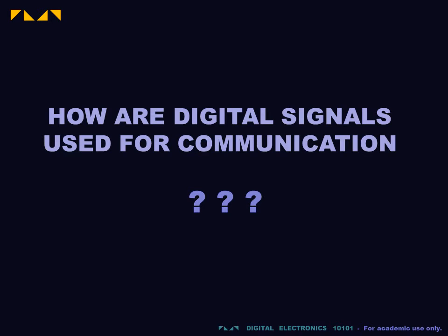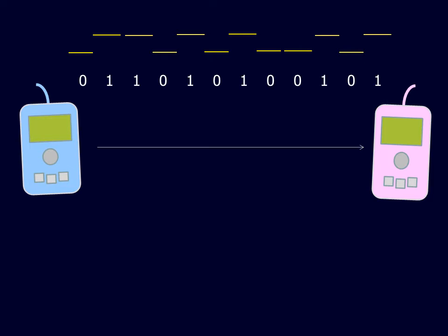We now study necessary considerations for the use of digital signals for communication. We saw in a previous video that a digital signal consists of a series of high and low electrical pulses, encoding logic units called bits.